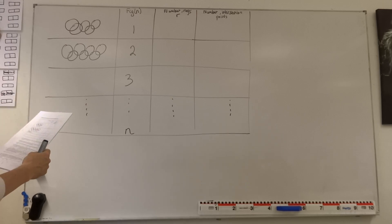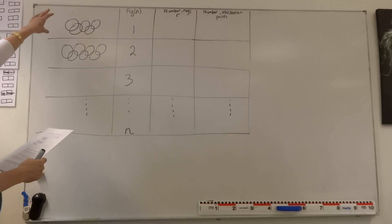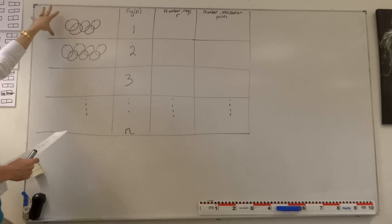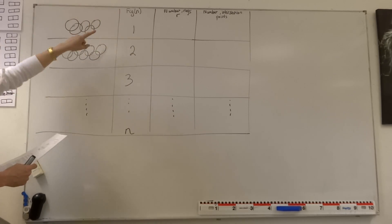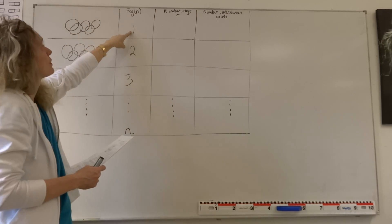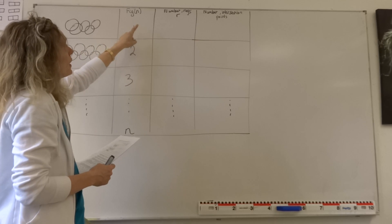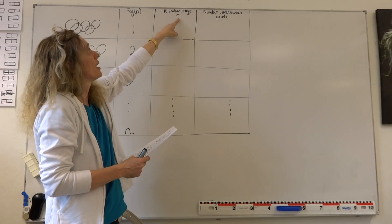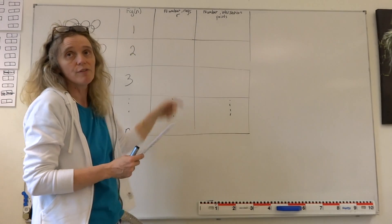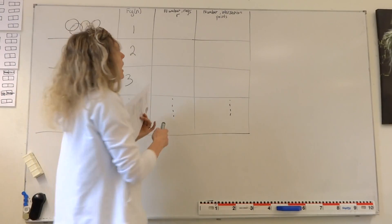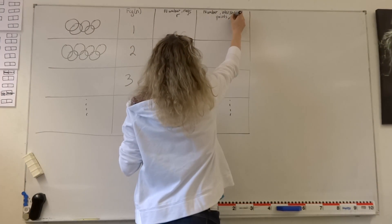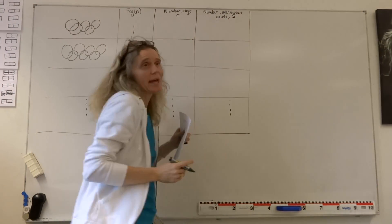We have a number of rings. There are 5 rings and we call this figure number 1. The number of rings is represented by the symbol R, and the number of intersection points is represented by the symbol S.